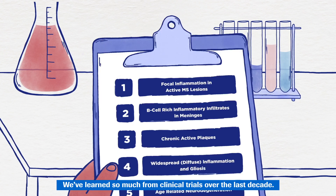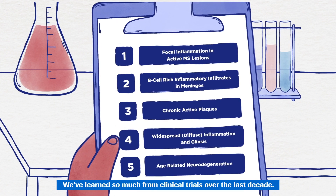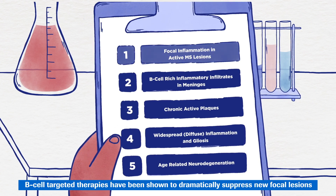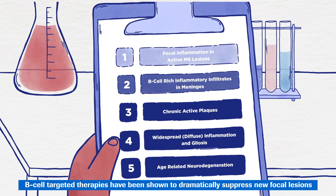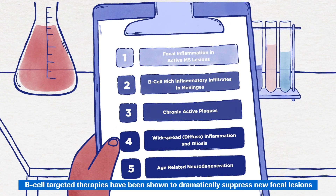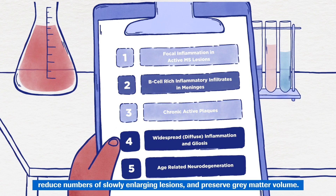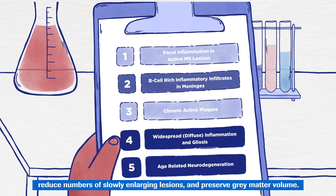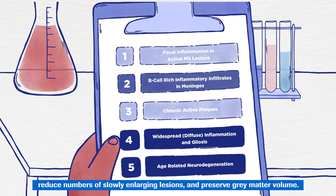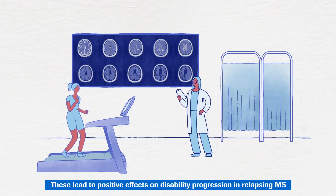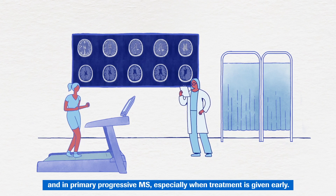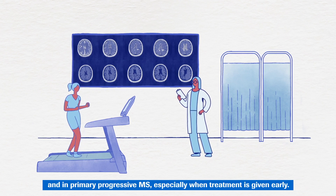We've learned so much from clinical trials over the last decade. B-cell targeted therapies have been shown to dramatically suppress new focal lesions, reduce numbers of slowly enlarging lesions and preserve grey matter volume. These lead to positive effects on disability progression in relapsing MS and in primary progressive MS, especially when treatment is given early.